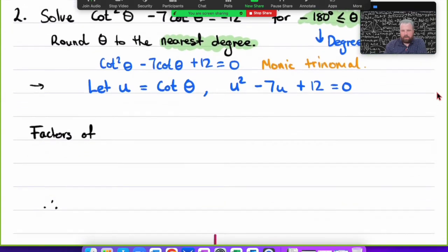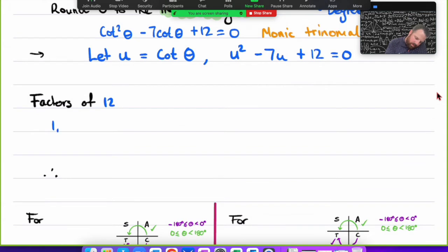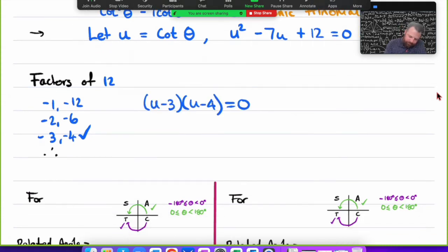Let's go through with factors of 12: 1, 12, 2, 6, 3, and 4. Looking at my trinomial, because that sign is negative, my highest factor is negative. The only way I can get a positive with a negative is if everything was negative. -3 and -4 are my factors. So we have (u - 3)(u - 4) = 0.